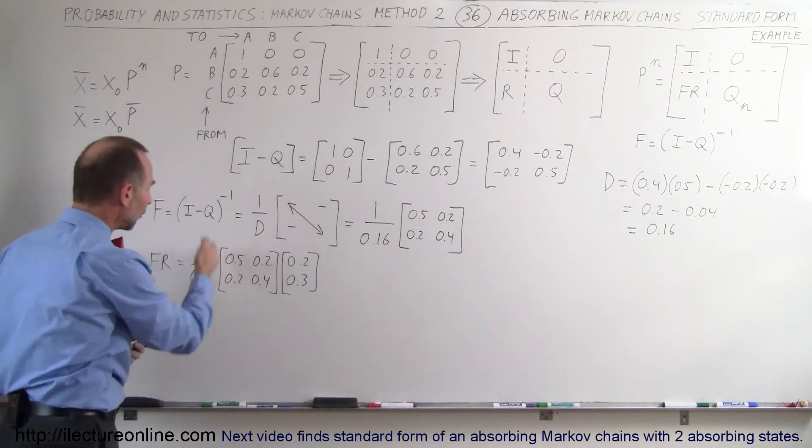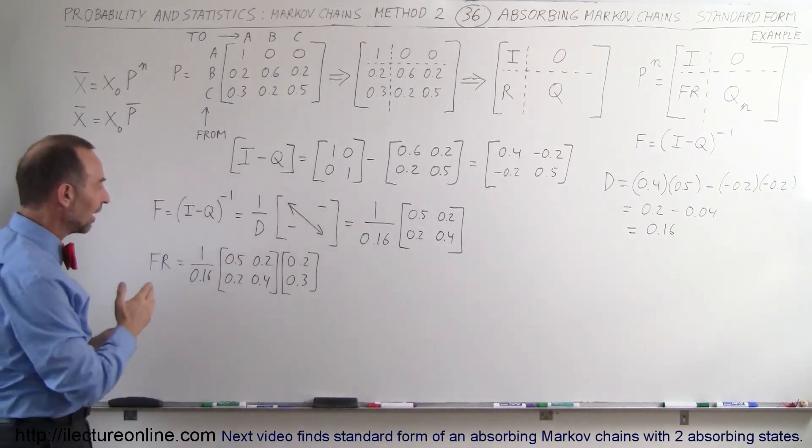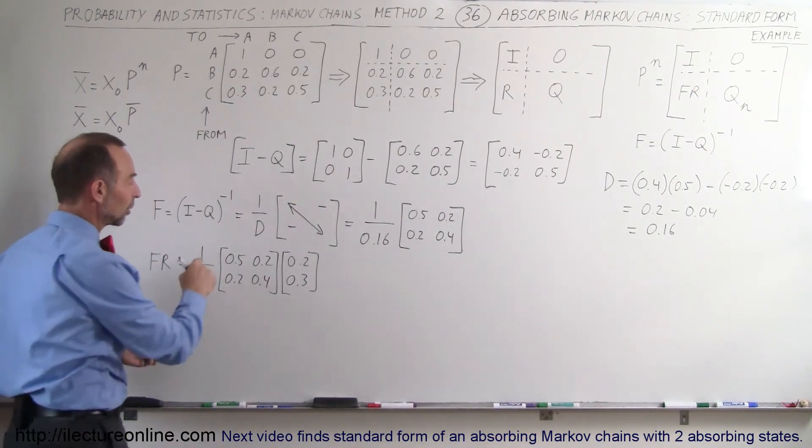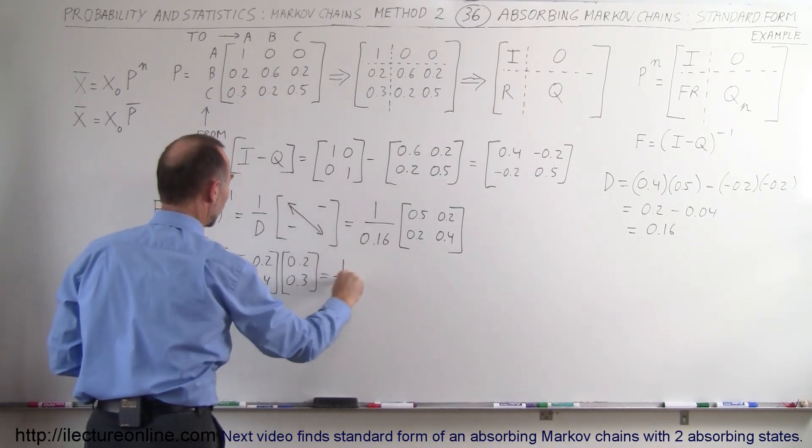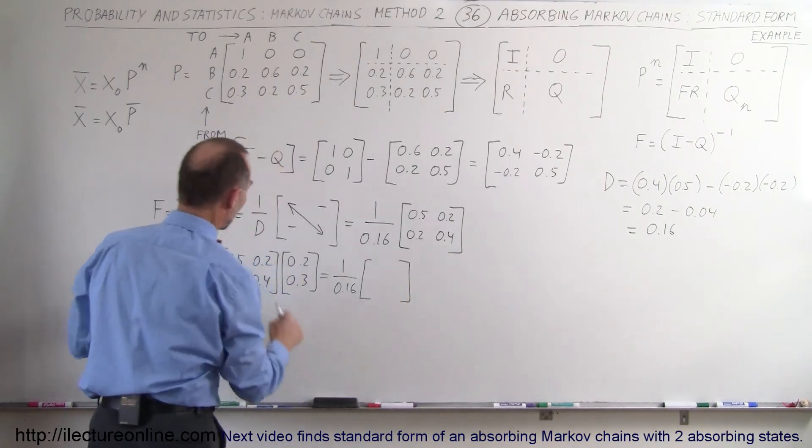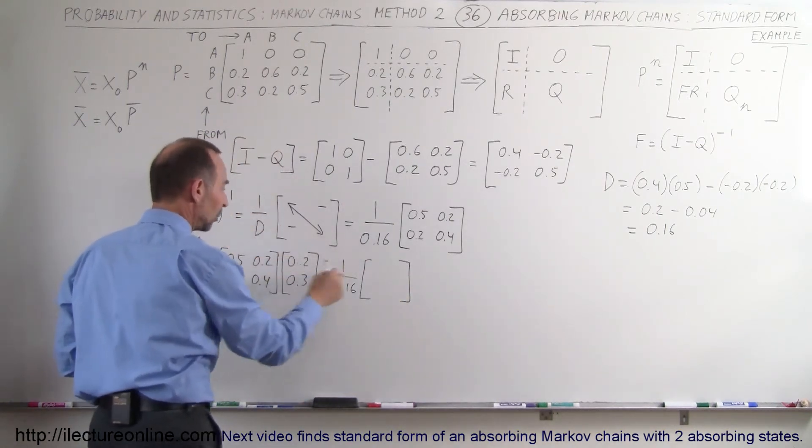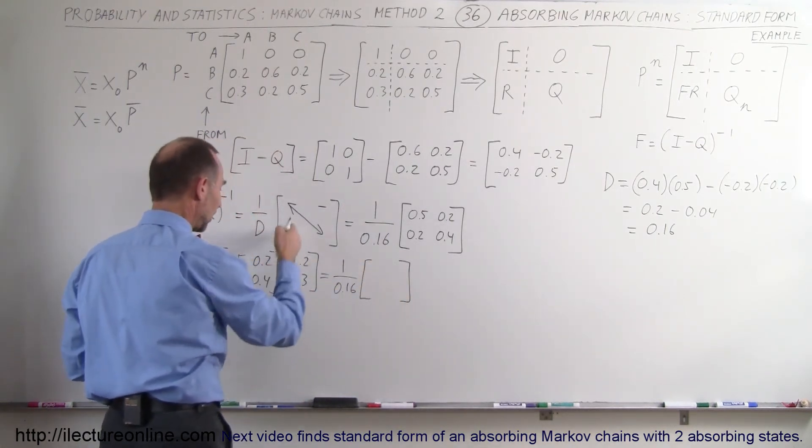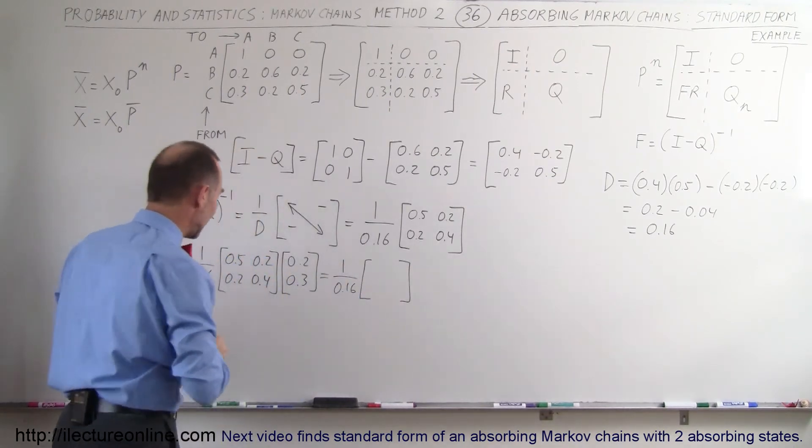Now we're going to leave the 1 over 0.16 on the left. We'll multiply that later. We're simply going to multiply this matrix here. So this ends up to 1 over 0.16 times, and we'll leave the matrix. This times this will give us this element and this row times this column will give us that element right there. So let's see what we get.